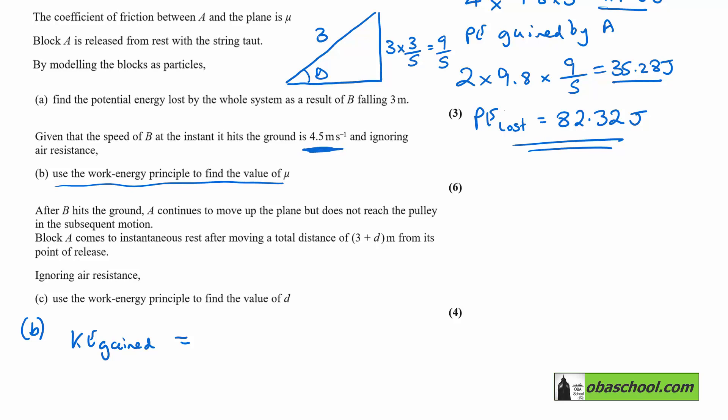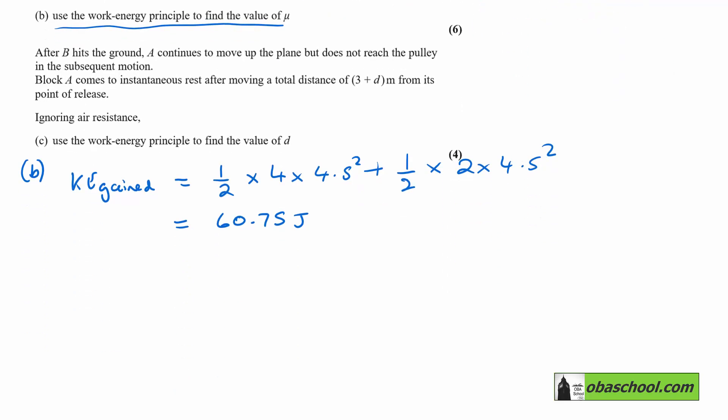We can see in the information here that the speed with which B hits the ground is 4.5, and consequently, A will be travelling at the same speed. So it's going to be a half times mass times the velocity squared for both objects. A half times 4 times 4.5 squared and a half times 2 times 4.5 squared. Calculating that gives us 60.75 joules. Therefore, the loss of mechanical energy is going to be 82.32 take away 60.75, which gives us 21.57 joules.